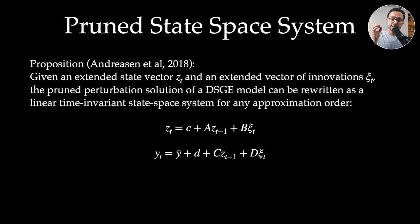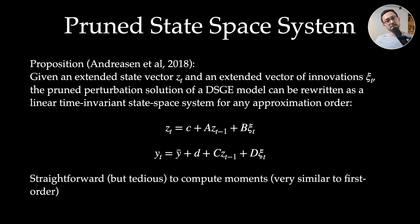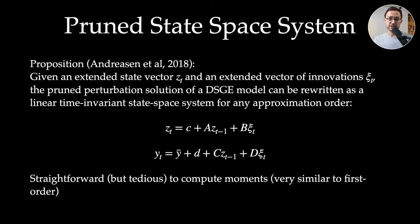Given the extended vector z and extended innovations ξ, the pruned perturbation solution of a DSGE model can always be rewritten as a linear time-invariant state space system for any order of approximation. Similar to the first-order Gaussian case, we can compute unconditional moments in closed form analytically by solving Lyapunov equations or generalized Sylvester equations for higher-order statistics. This is very tedious, but Dynare does this for approximation orders 2 and 3.